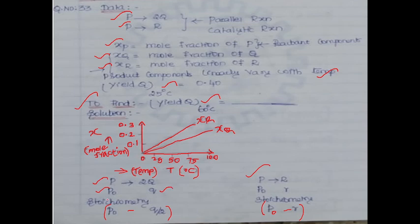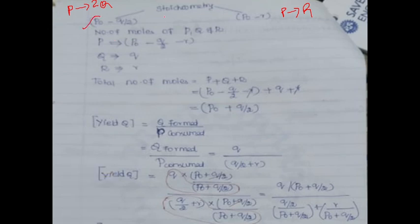For the stoichiometry: reaction P gives 2Q starts with P₀, producing small q moles, so P consumed in this reaction is q/2. Reaction P gives R consumes P₀ producing small r moles, so P consumed is r. The number of moles of P remaining is P₀ minus q/2 minus r. The Q component has small q moles, R component has small r moles. Total number of moles is the summation of all components.